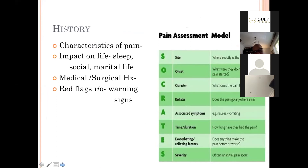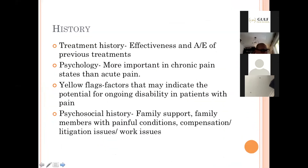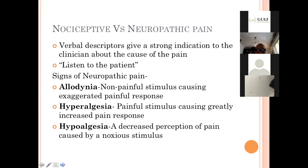Coming to the assessment, we need to know the characteristics of pain, which can be captured using the acronym SOCRATES: Site, Onset, Character of pain, Radiation, Associated symptoms, Time or duration, Exacerbating or relieving factors, and Severity. These are probably self-explanatory. The other elements include the impact on social life, marital life, and sleep, as well as medical and surgical history. You also need to rule out red flags.